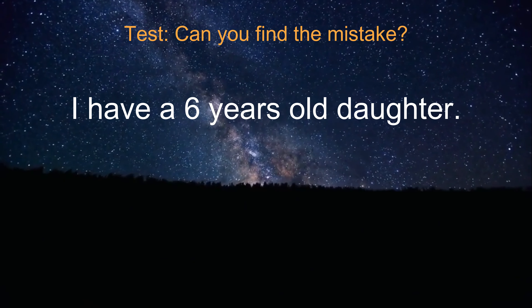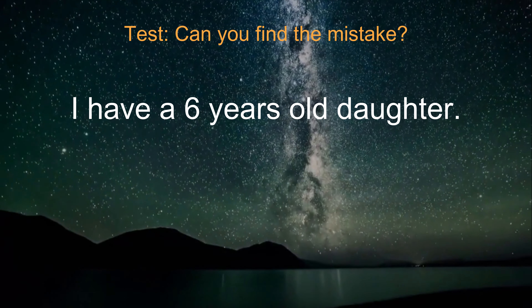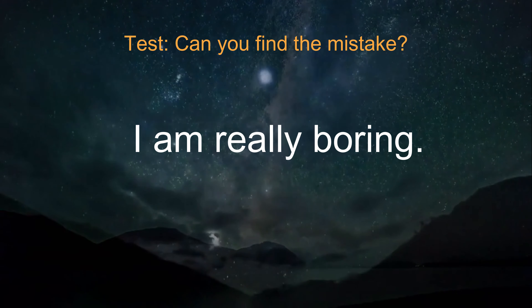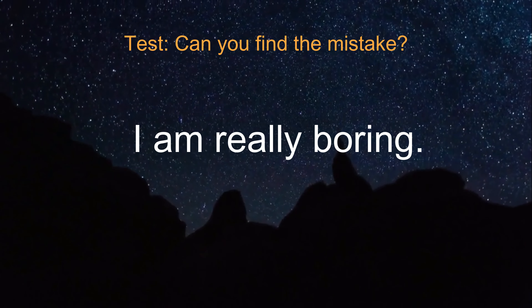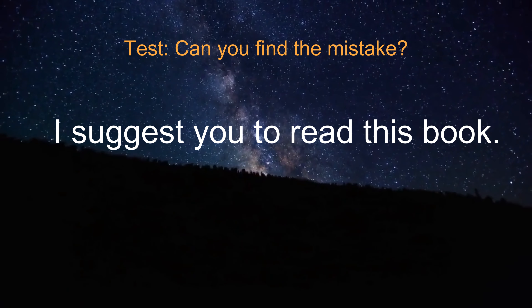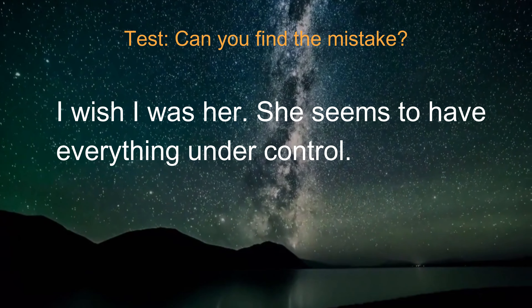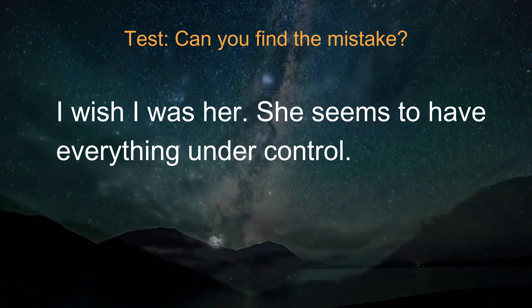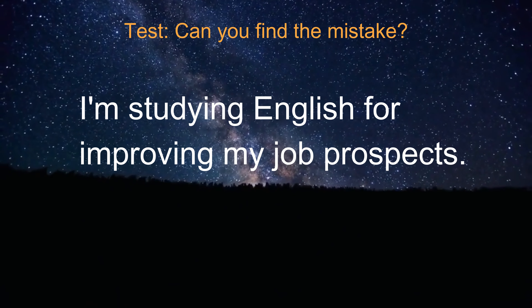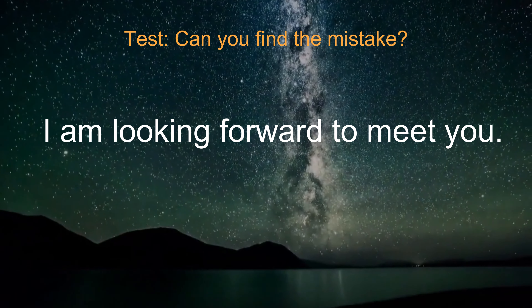I have a six-year-old daughter. Can you find the mistake in this sentence? I'm really boring. What about this one? I suggest you to read this book. Can you find the mistake though? I wish I was her — she seems to have everything under control. Is this one right? I'm studying English for improving my job prospects. Does it sound correct? I'm looking forward to meet you. Where is the mistake?